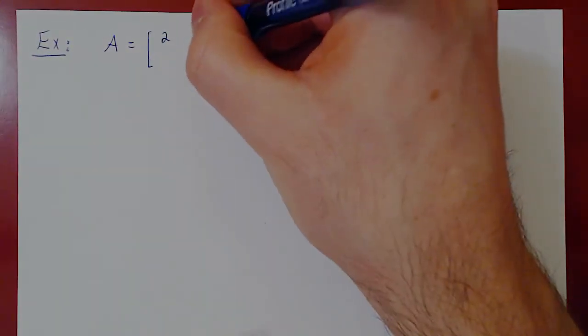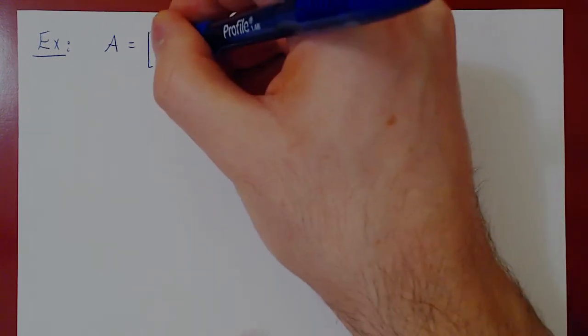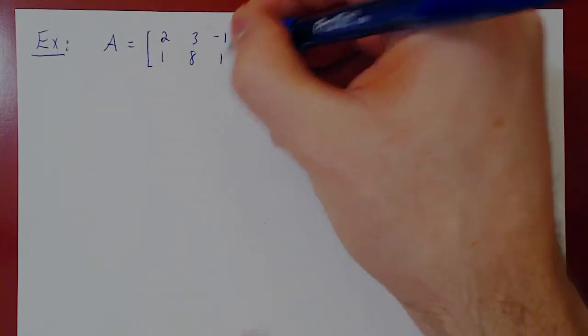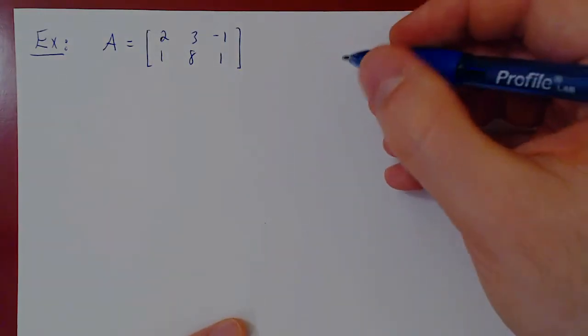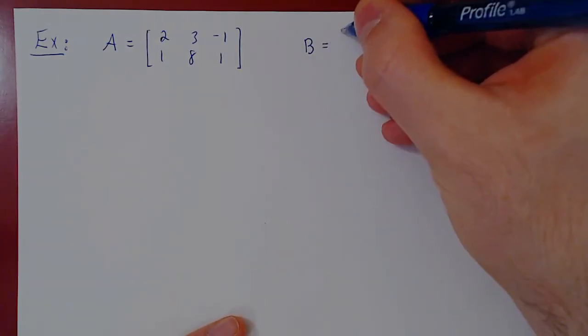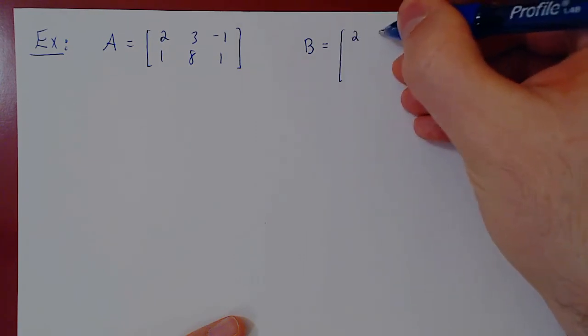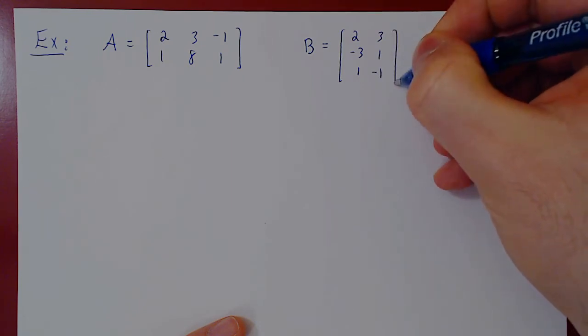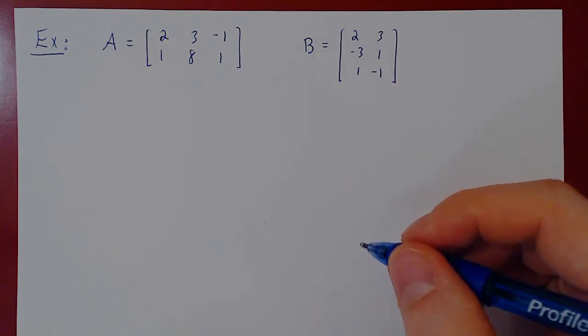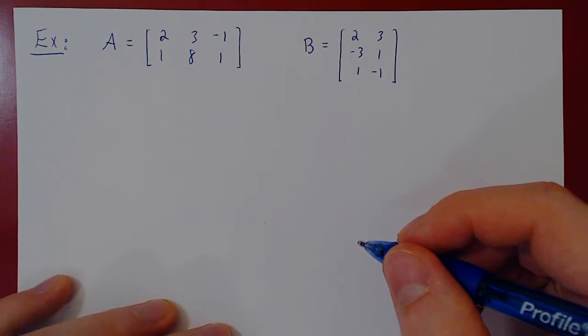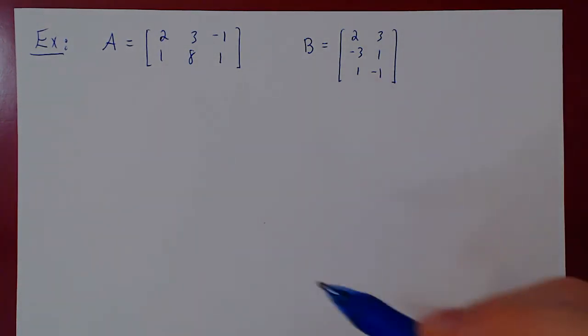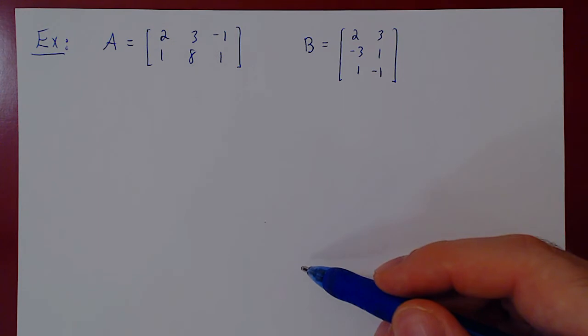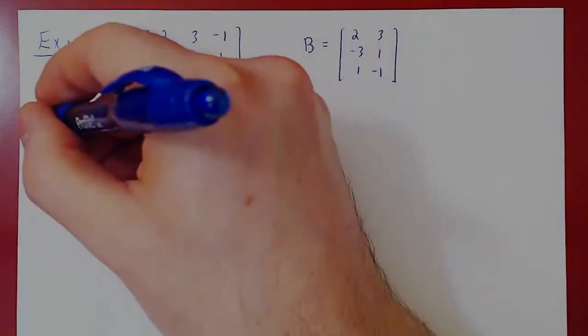Suppose we take A to be a 2 by 3 matrix. Let's go with 2, 3 minus 1, 1, 8, 1. A is a 2 by 3. Let's take B to be a 3 by 2. 2, 3, negative 3, 1, 1, negative 1. Let's compute AB and then BA, and look at their trace. See if at least the result holds for this example. Again, the proof of which I leave as an exercise to you. Let's compute AB.